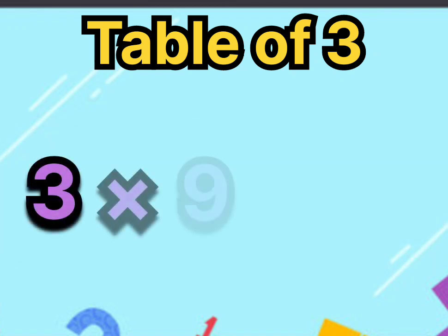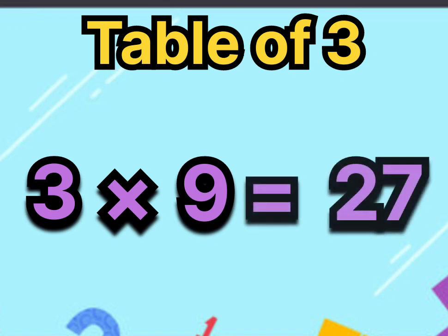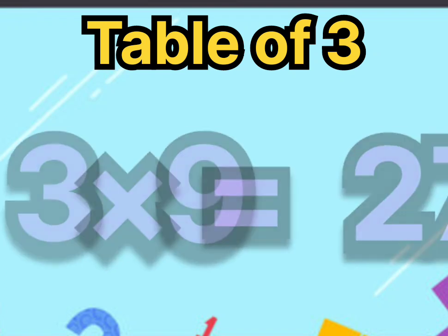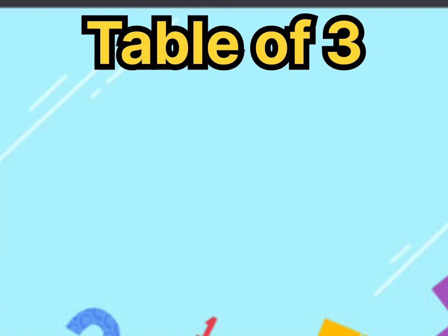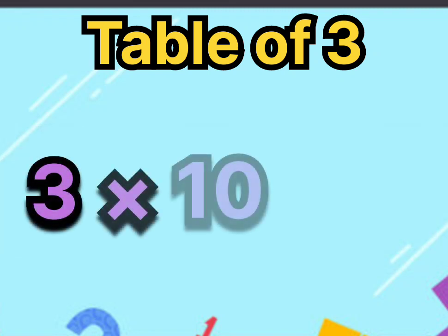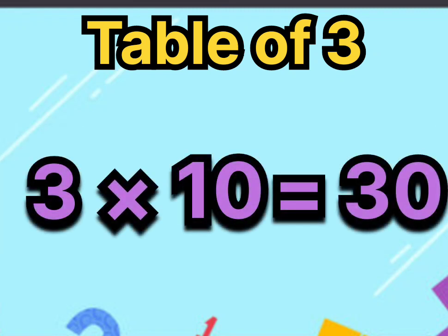Three nines are twenty-seven. Say it again, three nines are twenty-seven. Three tens are thirty. Say it again, three tens are thirty.